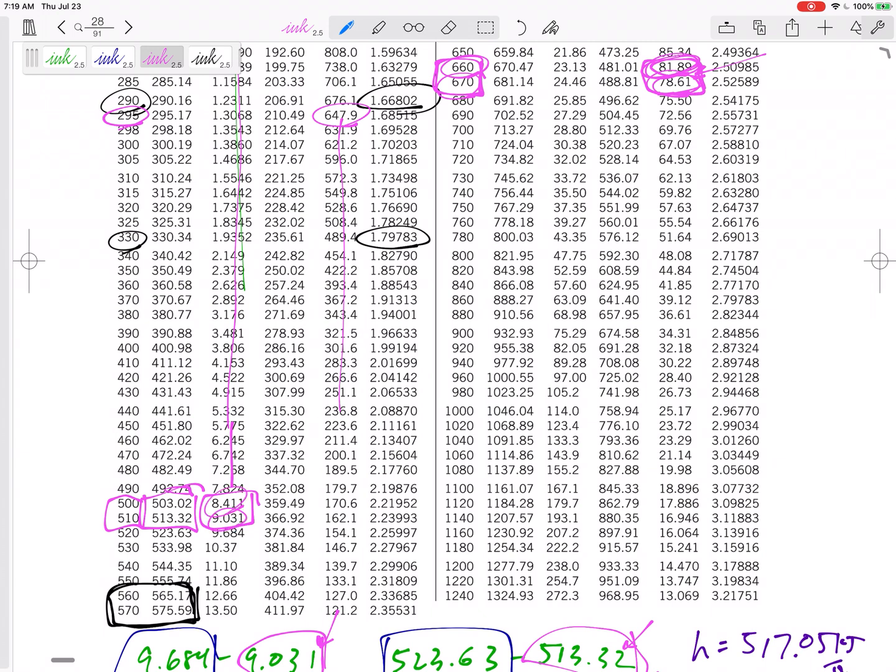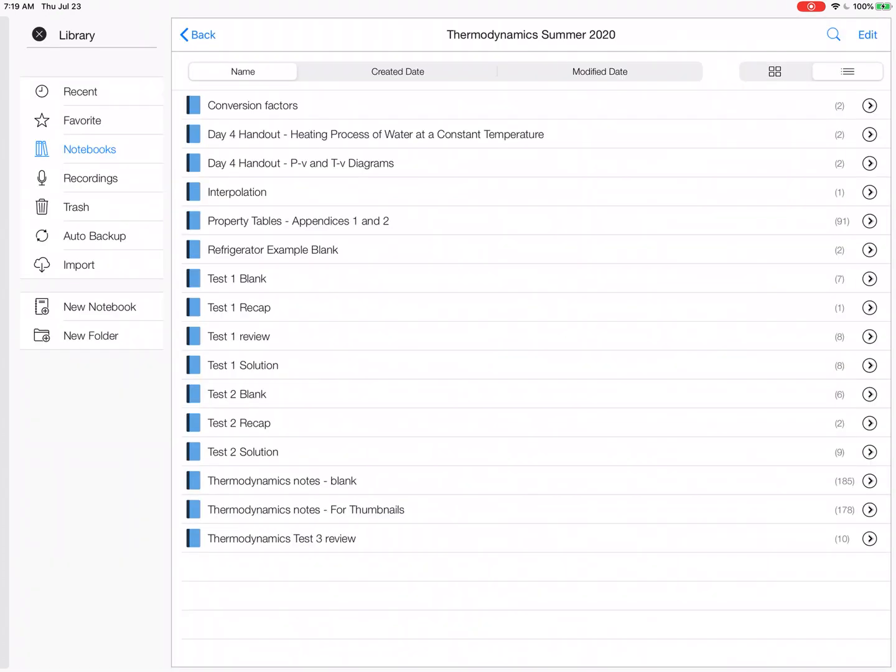So top minus bottom over middle minus bottom. Top minus bottom, that's how I do my interpolation. However you need to do your interpolation, maybe your calculator has an inter function, which I think they do. Find H2S. Okay? All right.